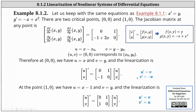Now we go through the process again using the second critical point (1, 0). Since the critical point is (1, 0), we have u equals x minus 1 and v equals y. We evaluate the Jacobian matrix at (1, 0). The first row is still 0, 1, but the second row is now 1, 0. Notice when x is 1, the entry in row 2 column 1 is negative 1 plus 2, giving us positive 1. So when u equals x minus 1 and v equals y, the linearization is: the derivative of vector (u, v) equals the matrix [[0, 1], [1, 0]] times vector (u, v), which we can also express as u prime equals v and v prime equals u.